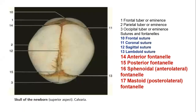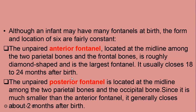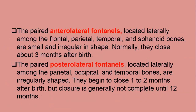The posterior fontanelle is found at the part labeled 15. We have the two parietal bones and the posteriormost bone known as the occipital bone. The anterolateral fontanelle is located laterally among the frontal, parietal, temporal, and sphenoidal bones. It is small and irregular in shape and normally closes about three months after birth.